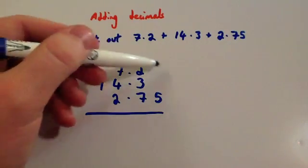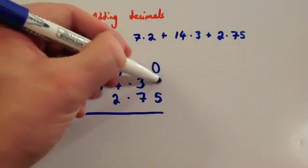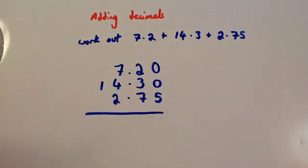Also, if there's no numbers here, I tend to just put a zero there, just to ensure that I keep in the place value, and then you add them up.